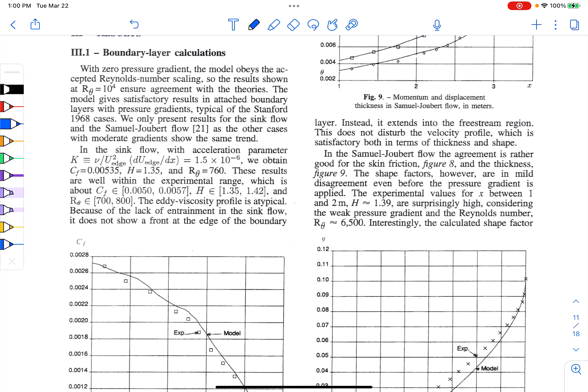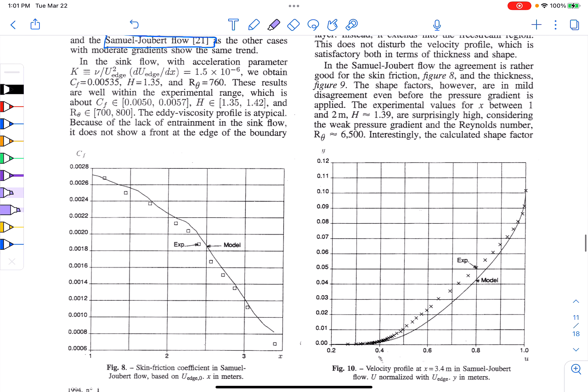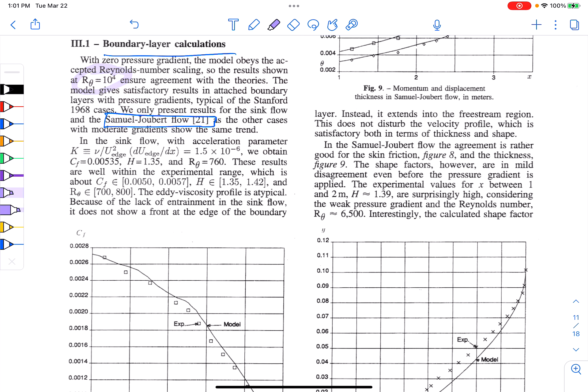And one of the hardest flows that they wanted to look at for boundary layers was called the Samuel-Jobert flow. So what is that? That's nothing but an adverse pressure gradient flow. And the pressure gradient is gradually increasing. So a lot of the wind tunnel experiments, sometimes you just have a constant increasing pressure gradient, like partial P partial X is like a constant, positive constant. Here, this gradually increased, and it's a little bit more challenging. So they chose one of the more challenging flows for their model to be calibrated against. And to give you an idea of the Reynolds number, about 10 to the fourth.